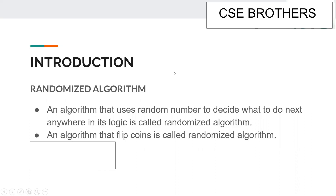Suppose we are given an array of size n and we are supposed to find whether the array consists of duplicate elements or not. The brute force approach says we will check every pair to see whether they are the same or not, and if any pair matches we return true, meaning the array consists of a duplicate element.